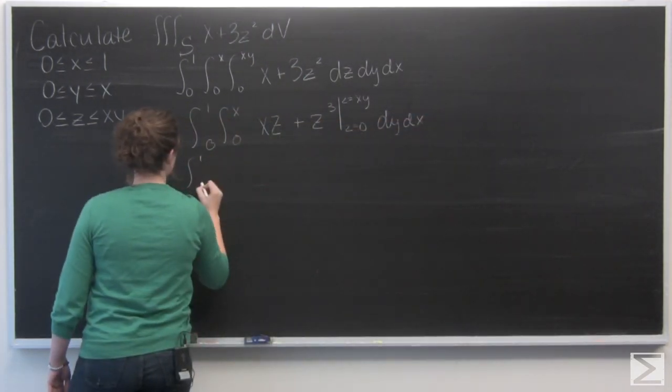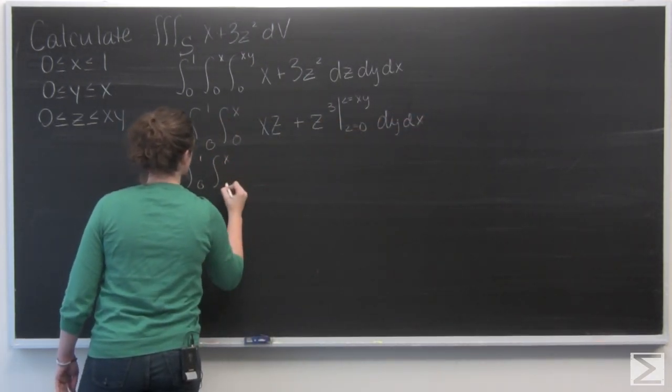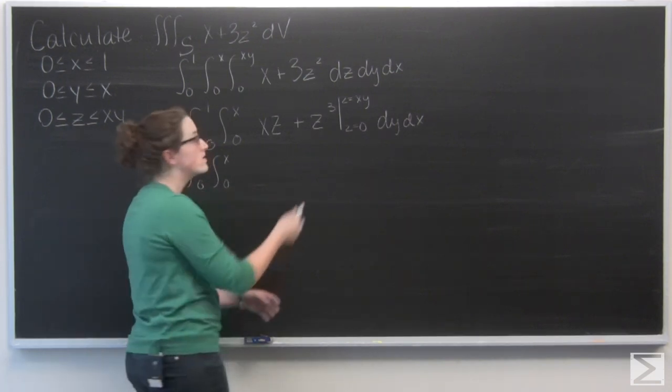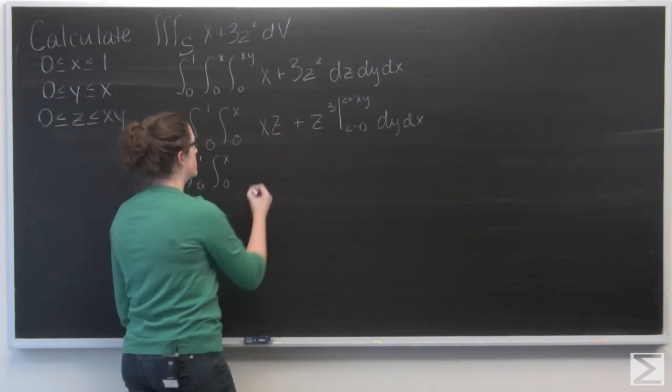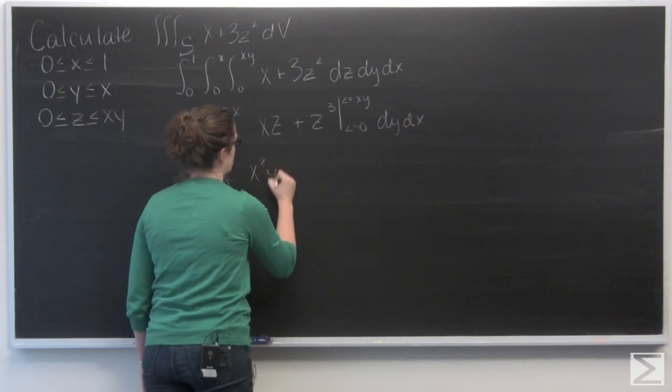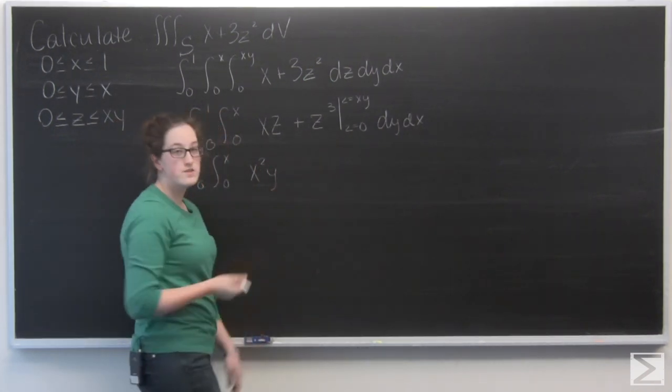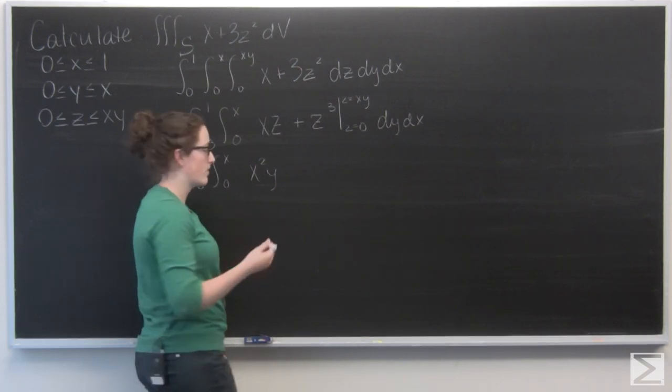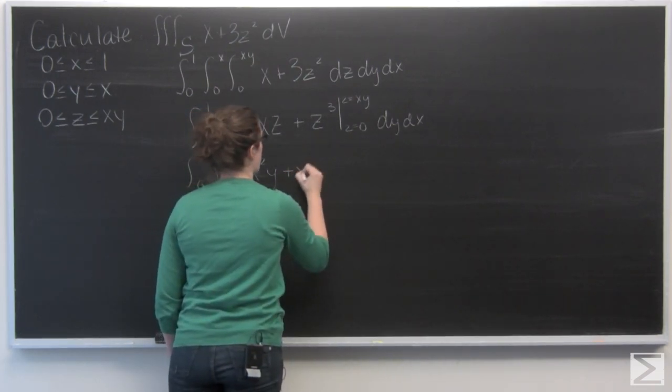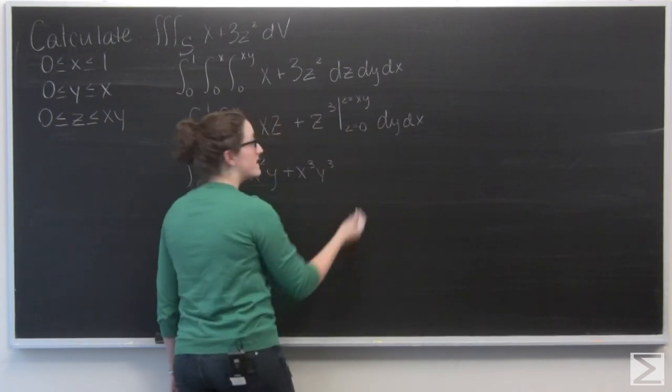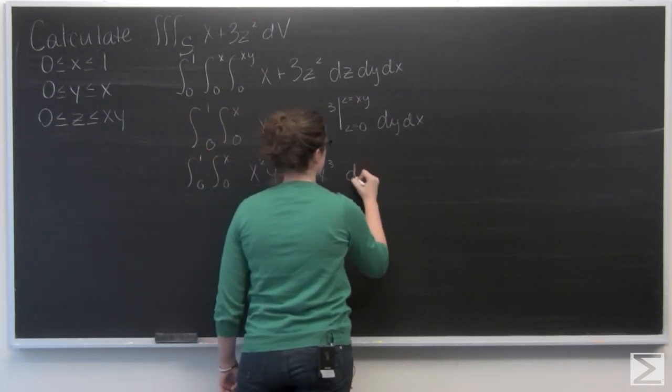Carry through my signs. So plug in xy first. Get x squared y. And then z to the third just becomes x to the third, y to the third. And then dy and dx just carry through.